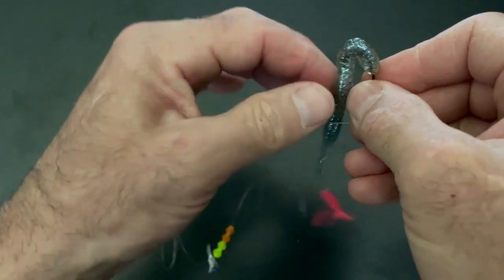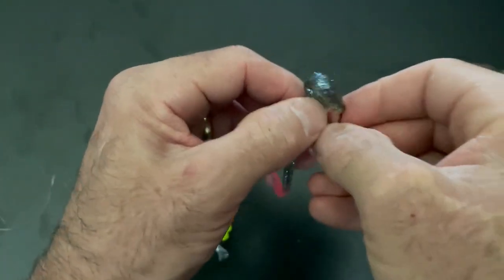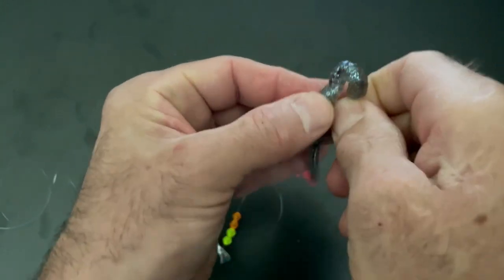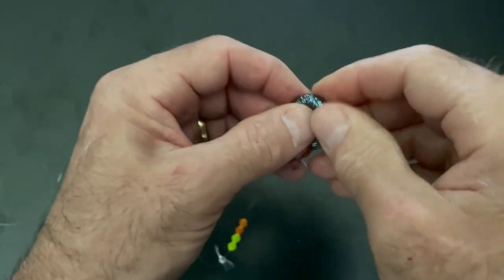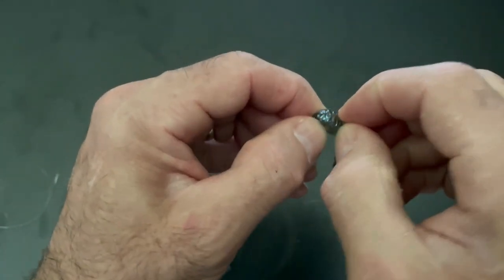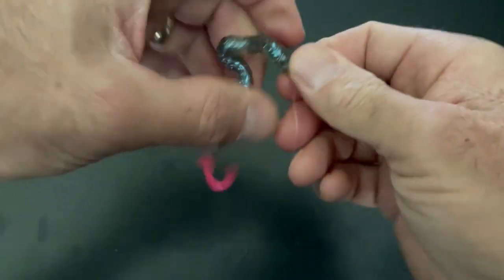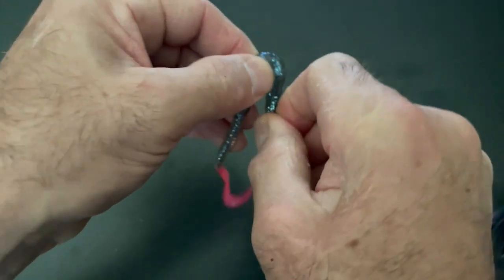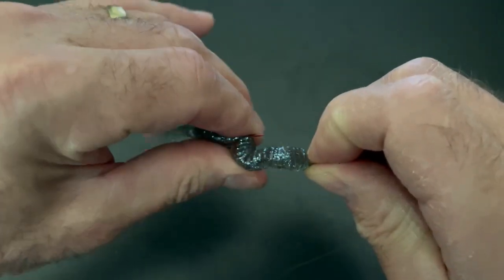You're going to thread it all the way up just like this. Just keep working it. I know it's a little tedious, but you really want to take this part pretty serious and do a pretty good job of it. You're going to get it up all the way over the eyelet like this. Not quite yet. I've got a little more to go. All right, so now it's over the eyelet.